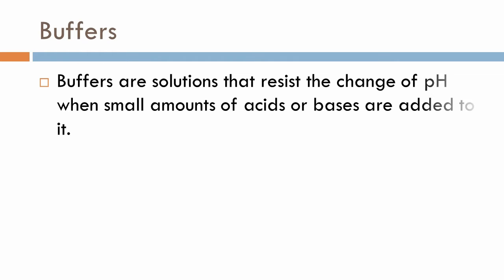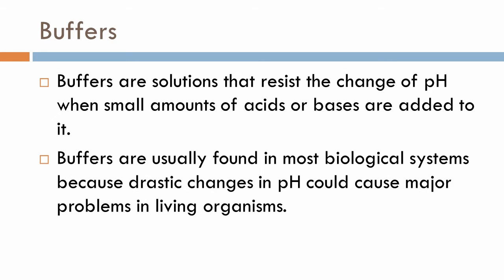Today we're going to talk about buffers. Buffers are solutions that resist the change of pH when small amounts of acids or bases are added. You will find buffers mostly in biological systems, and a drastic change in pH is usually detrimental to life. Living organisms therefore have natural buffers — blood plasma is a typical example.